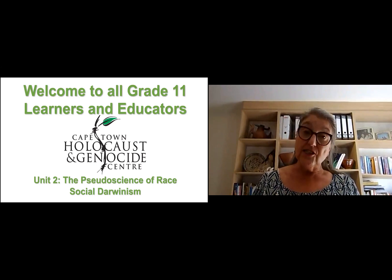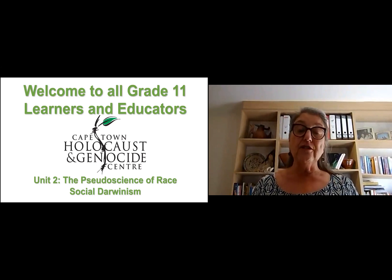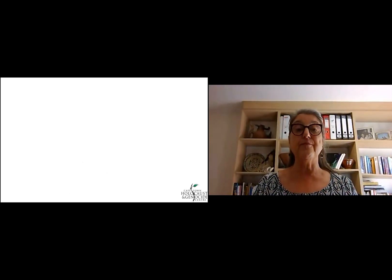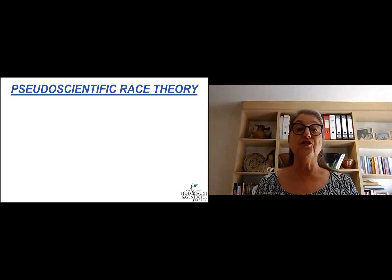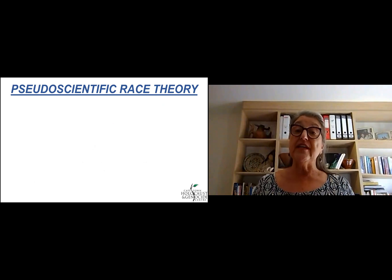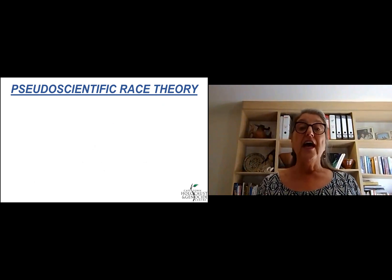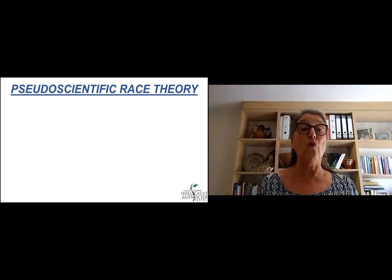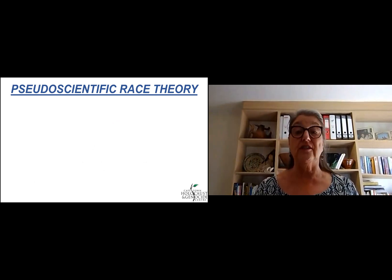In our last unit, we did a basic introduction. Today, we're going to focus on the pseudoscience of race and on social Darwinism. So let's start with pseudoscientific race theory — how it begins, where it begins, and when it begins. I just want to remind you: pseudoscience means false science, or incorrect science, or non-factual science.